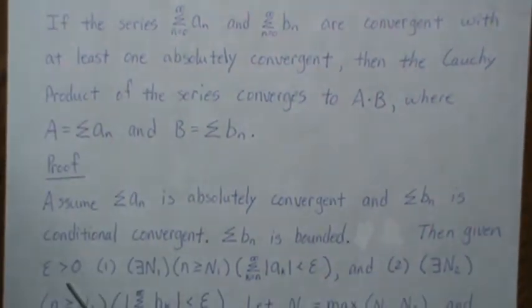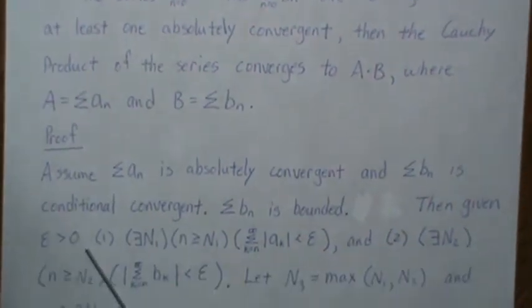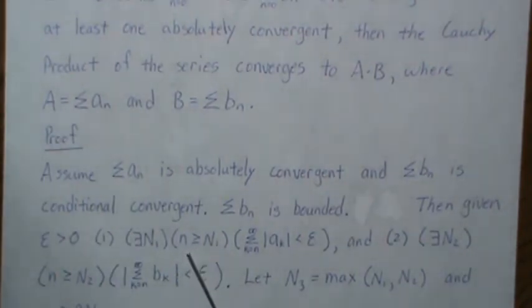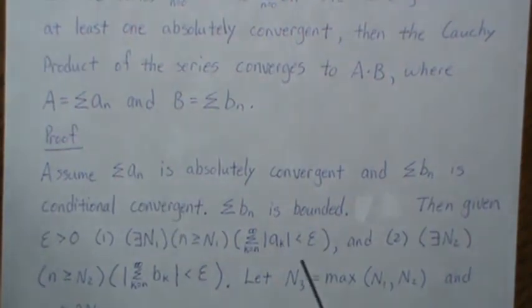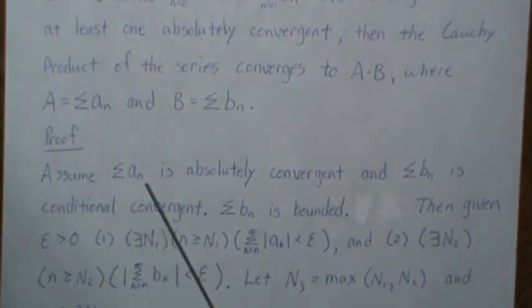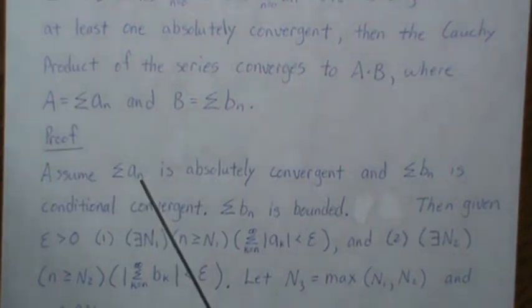Then given epsilon greater than zero we know two things. One, there exists an N1 such that when N is greater than N1 we know that the series from N to infinity of the absolute value of AK is less than epsilon. So what this means is as we're adding up infinitely many terms, the tail end of this better be pretty small so it can converge.